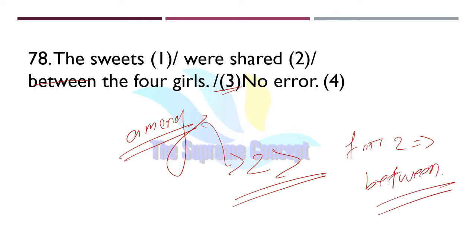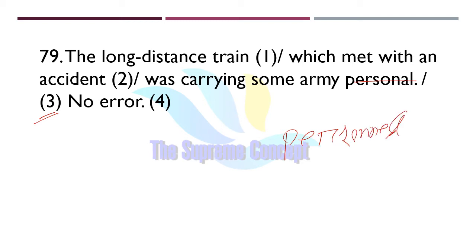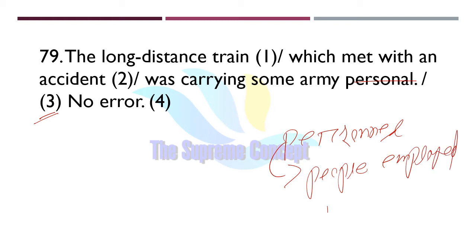Question number 79: 'The long-distance train which met with an accident while carrying some army personnels.' Find out the error. The error lies in part number three — we will use 'personnel' — P-E-R-S-O-N-N-E-L — which means people employed, especially active in an organization or business.